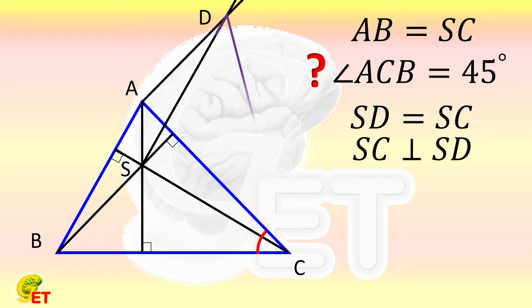SCD is thus the isosceles right triangle that we expect. The angle SCD is therefore equal to 45 degrees.